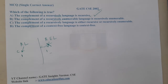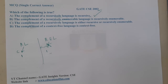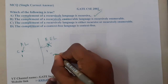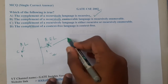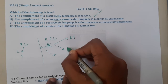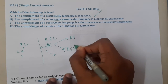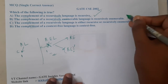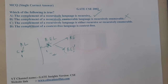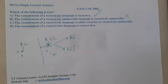Option B says that the complement of a recursively enumerable language is recursively enumerable. Since RE is not closed under complement, the complement might or might not be recursively enumerable — we cannot conclude it, so Option B is wrong. Option C says the complement of a recursively enumerable language is either recursive or recursively enumerable.